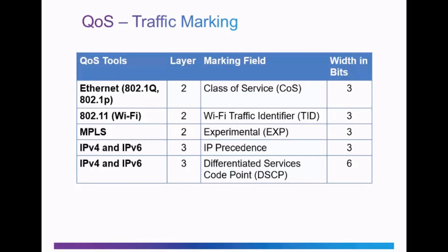At Layer 3, with IPv4 and IPv6, we use the Type of Service and Traffic Class fields using IP Precedence, or IPP, and DSCP — the Differentiated Services Code Point. With Layer 3 traffic marking, the marking can travel from router to router, and therefore the QoS marking can be carried end to end across the network.